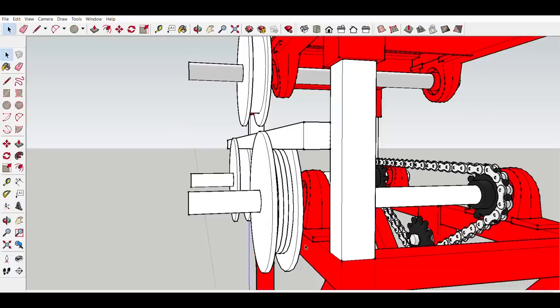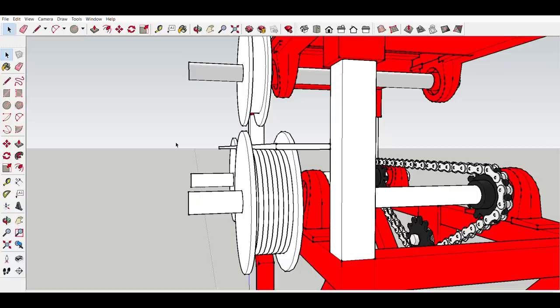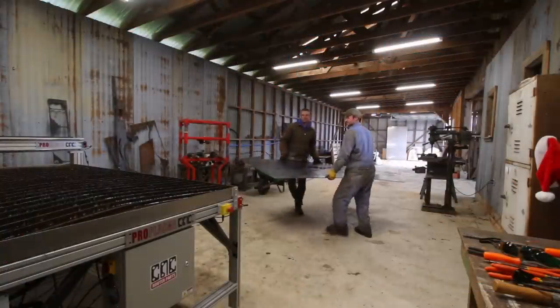When I got the CNC plasma cutting table, I thought I might be able to make my own dies and finally finish the ring roller. I currently have another project going on that I really needed something rolled for, which was just the motivation I needed to finish this thing up.